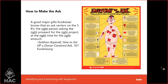Making the ask is what scares everybody, but it comes down to the five R's: the right person asking the right prospect for the right project at the right time for the right amount. Think about who has the relationship, does this donor care about your project and why, is this in line with their giving. You have to be asking questions — getting to know the donor, knowing what they care about, and figuring out that alignment. The athletic department fundraiser in my example was able to identify and cultivate those alumni donors who cared about the football program and secured all those donations.